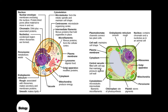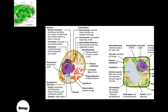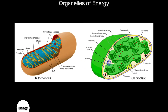Lysosomes contain digestive enzymes and can be used for digesting food material and for destruction of old cell parts — breaking down old cell components. A type of cell that has lots of lysosomes is your immune system's white blood cells, because their job is to hunt down and destroy invading bacteria.